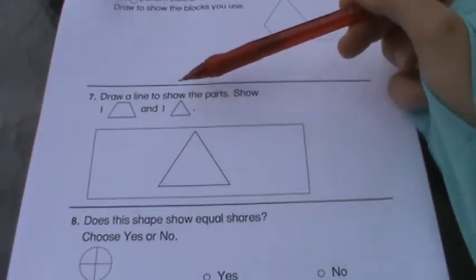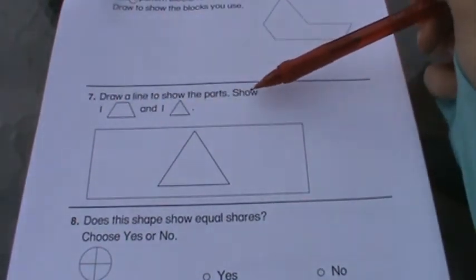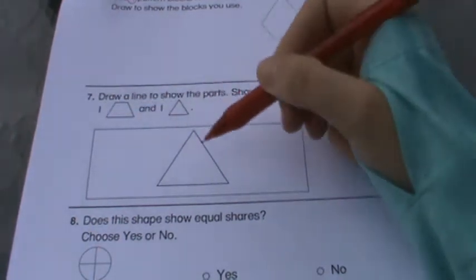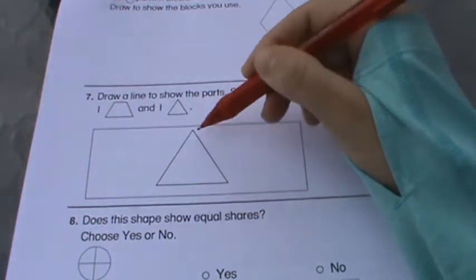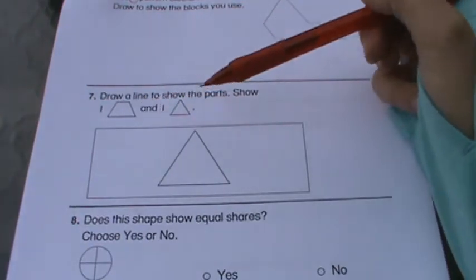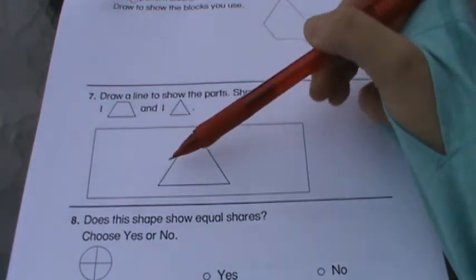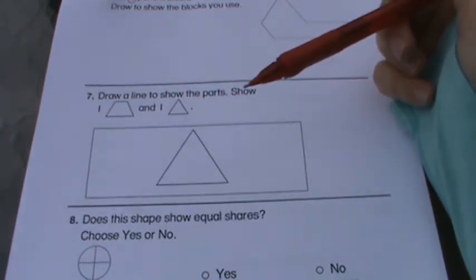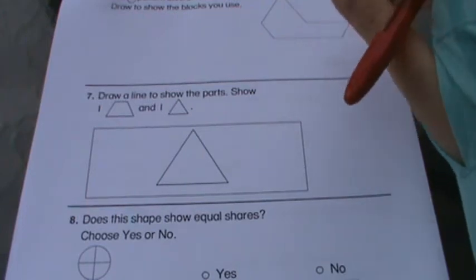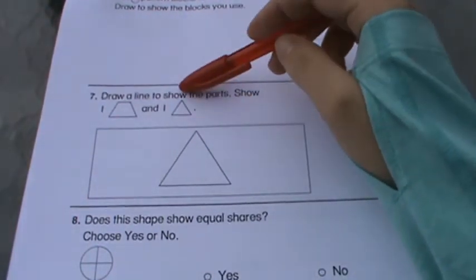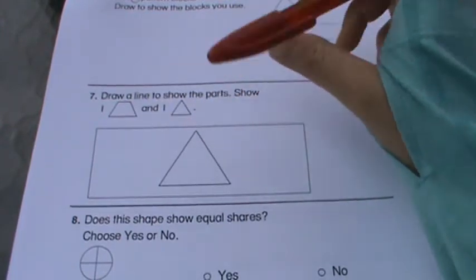Number seven, draw a line to show the parts. So you need to show one trapezoid and one triangle. In this big triangle, you need to break it up and divide it into one trapezoid and one triangle. So show me where you would have to split it to have a trapezoid and a triangle. If that's confusing to you, get out your pattern blocks. Get out one trapezoid and one triangle and put them together to make a bigger triangle.